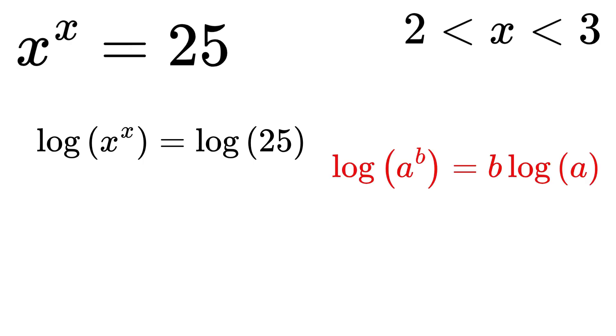Using the power rule of logarithms, we can rewrite this as x multiplied by the natural logarithm of x equals the natural logarithm of 25.